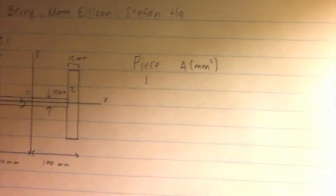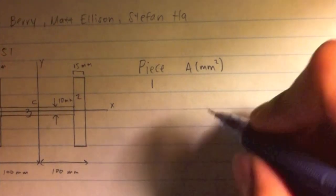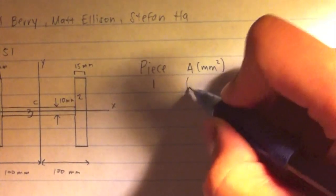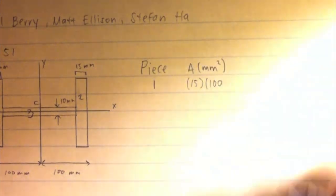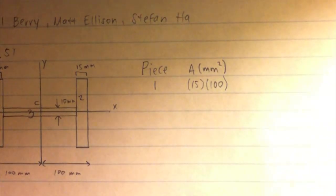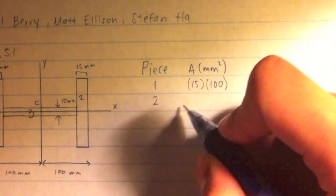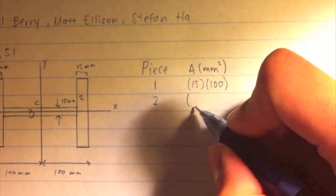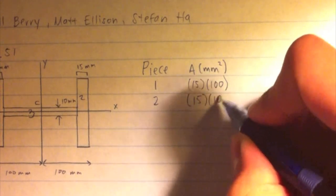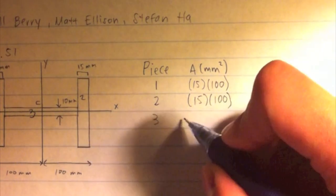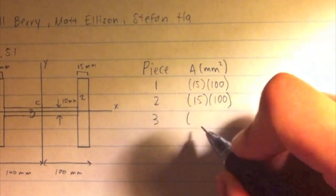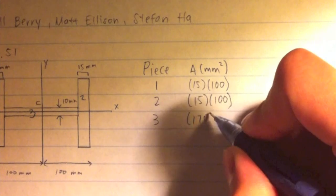To start our solution, we wrote a table in which we identify each piece and its area, the distance from each piece's centroid to the axis which we're calculating the moment of inertia around, and the moment of inertia of each separate piece around its own centroid.